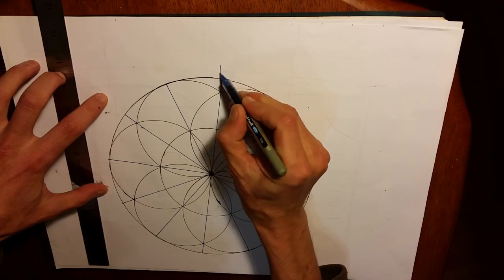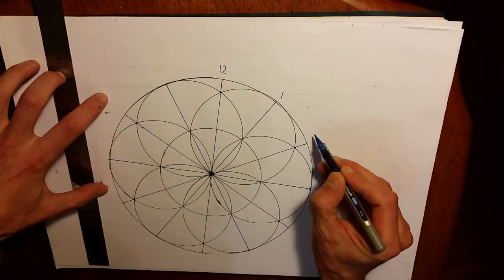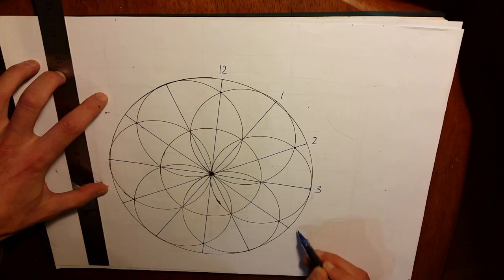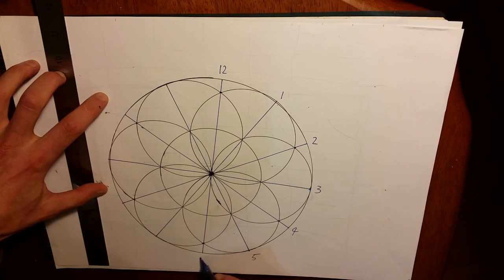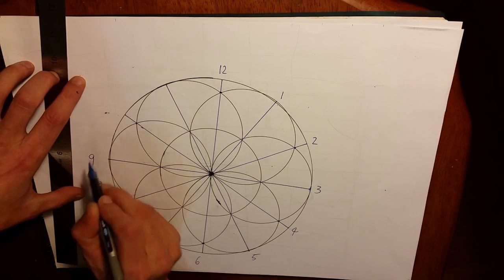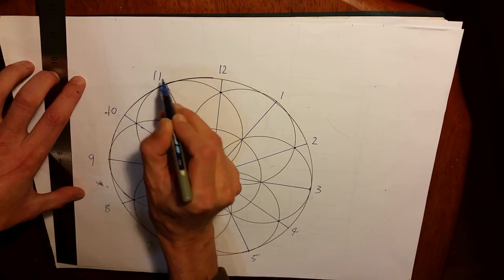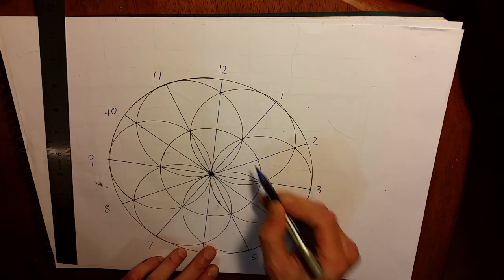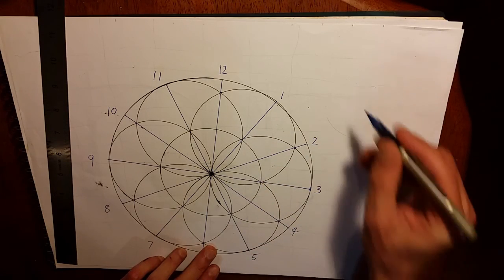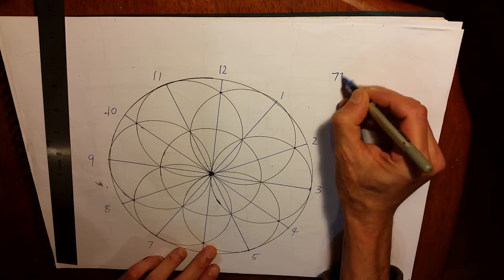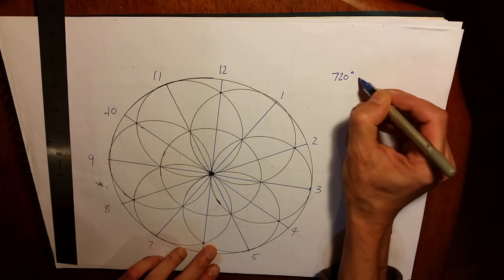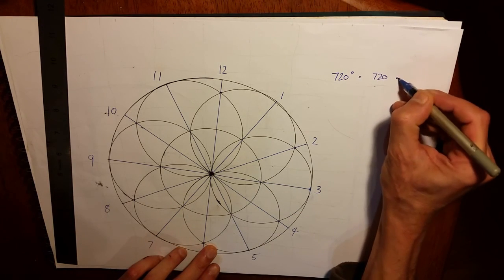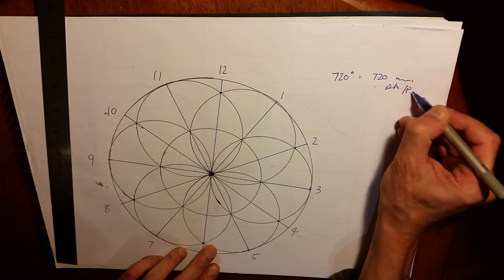So we have 12: 1, 2, 3, 4, 5, 6, 7, 8, 9, 10 and 11. So here we have our clock. On the inside we have our hexagon which consists of 720 degrees altogether. 720 minutes in AM, PM.